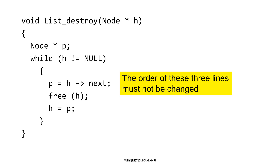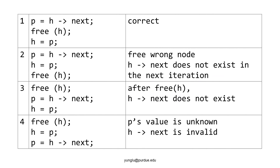There are six possible orders of these three lines, but only one of the six orders is correct. The first is the correct order: it stores h's next in p first, then frees h, then uses p's value to set h's value.